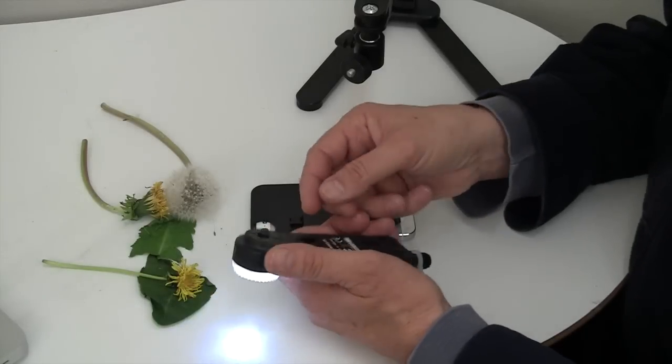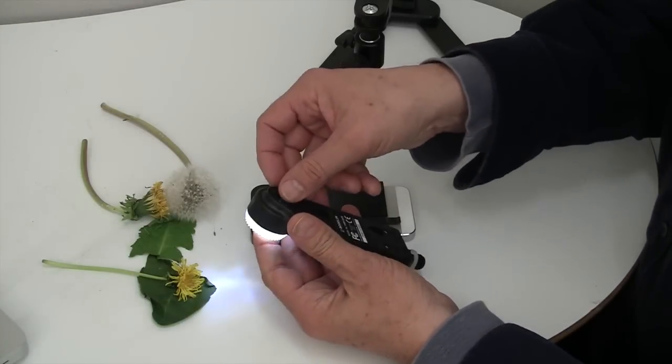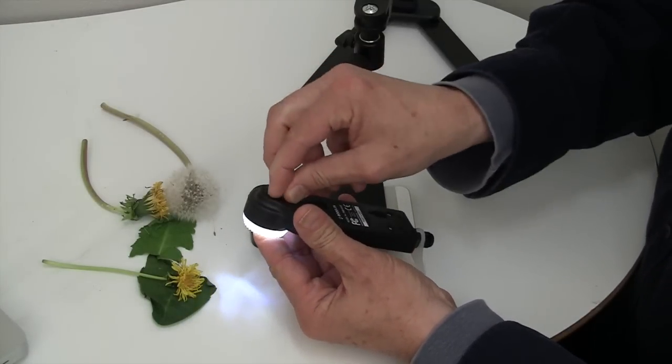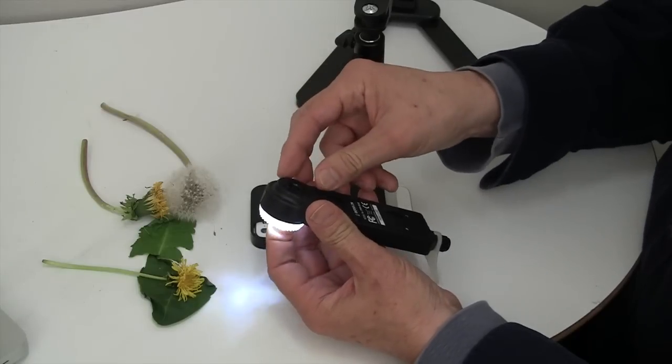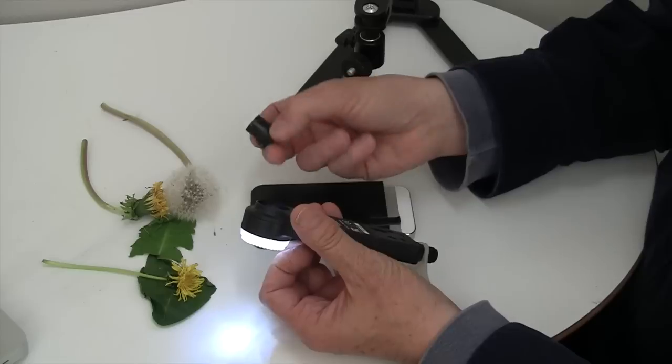But if I want less magnification, all I have to do is remove our lens by turning this counterclockwise, and the lens just pops out.